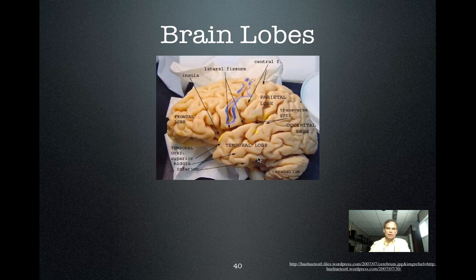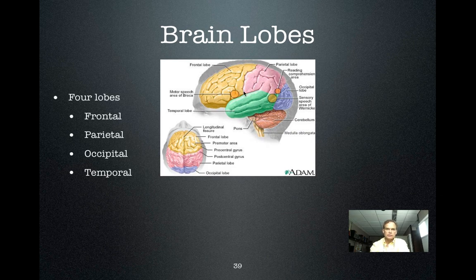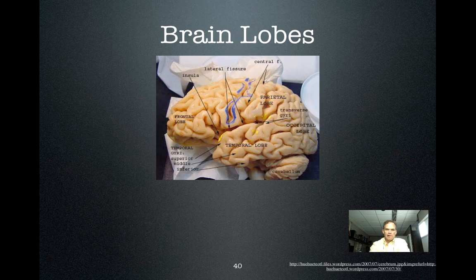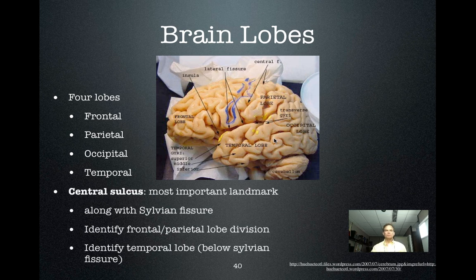Here's an actual brain — not quite as pretty — but you can see the central sulcus here. There's the central sulcus and sylvian fissure, so that makes all of this frontal lobe, all of this parietal lobe, back to somewhere here that's occipital lobe. There are some landmarks there, and temporal lobe. It's also called the lateral fissure — it's the sylvian fissure.